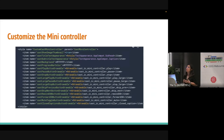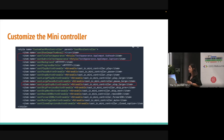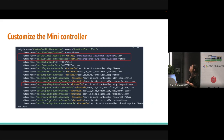We can also customize any of these UI components. For example, if you want to change the cast title text appearance or if you want to change the castLargeStopButton icon, you can customize everything in this code. This example is for the mini controller, but you can also customize other UI components in the casting app.